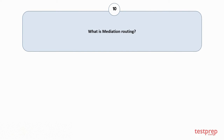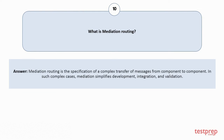Question number 10: What is mediation routing? Mediation routing is the specification of a complex transfer of messages from component to component. In such complex cases, mediation simplifies development, integration, and validation.